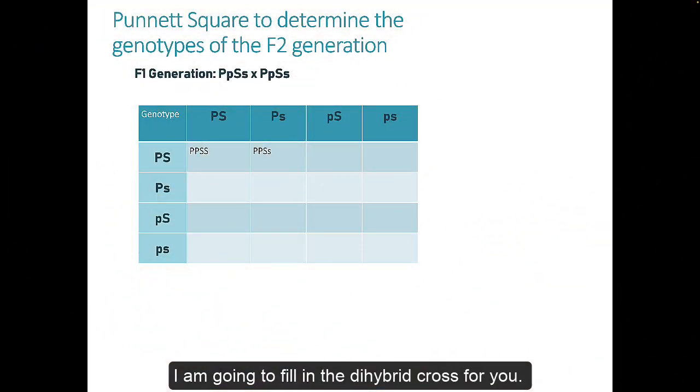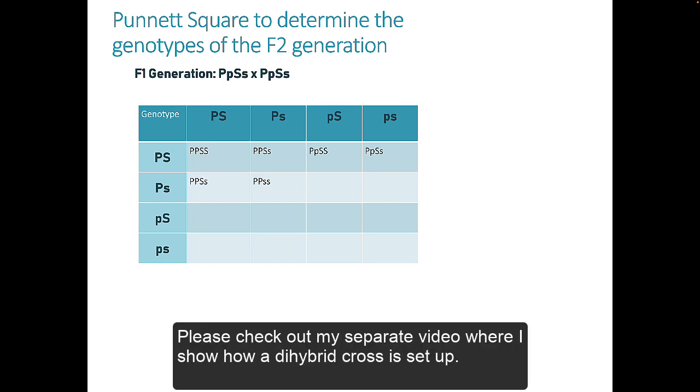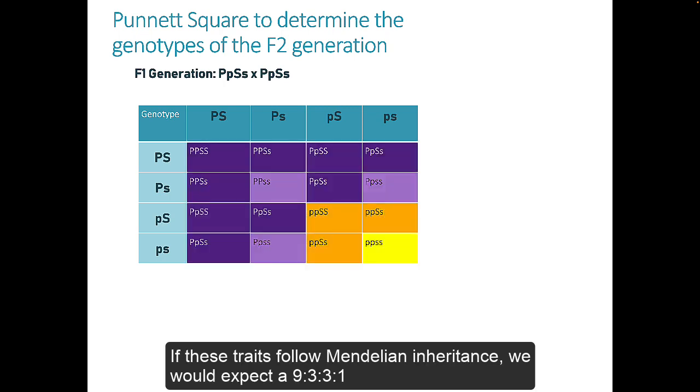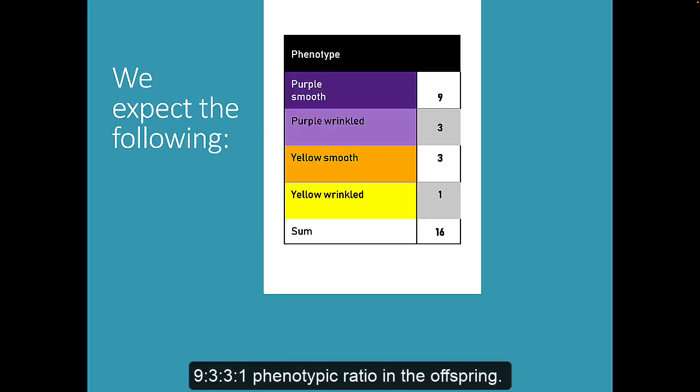I am going to fill in the dihybrid cross for you. Please check out my separate video where I show how a dihybrid cross is set up. If these traits follow Mendelian inheritance, we would expect a 9 to 3 to 3 to 1 phenotypic ratio in the offspring.